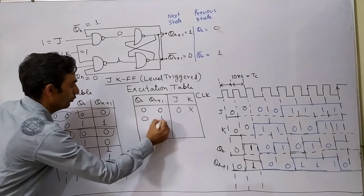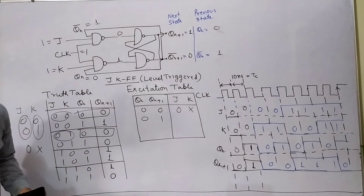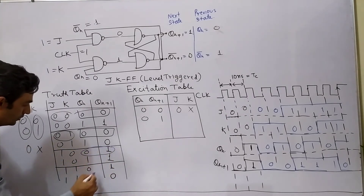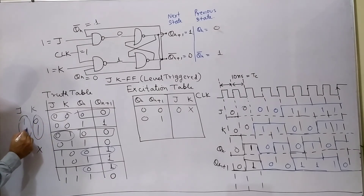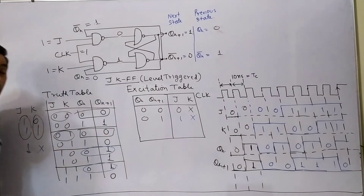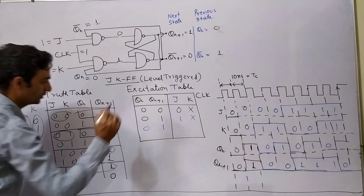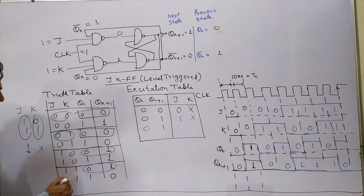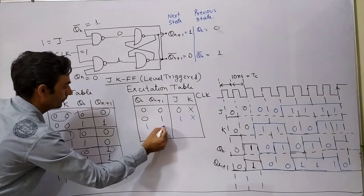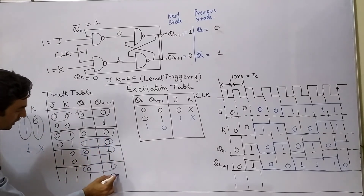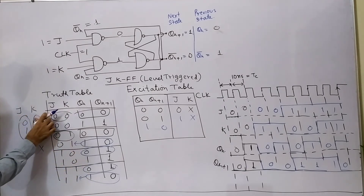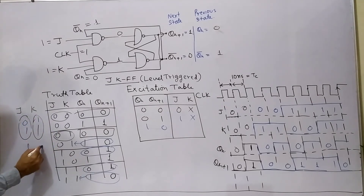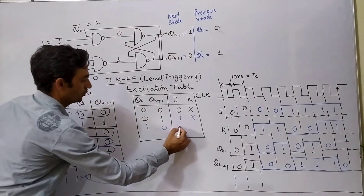Next, QN to QN+1 = 0 to 1: the cases are J=1, K=0 and J=1, K=1. So J is fixed at 1 and K is don't care — J=1, don't care. For QN to QN+1 = 1 to 0: the cases are J=0, K=1 and J=1, K=1. So K is fixed at 1 and J is don't care — don't care, 1. For QN to QN+1 = 1 to 1: the cases are J=0, K=0 and J=1, K=0. So K is staying at 0 and J is don't care — don't care, 0.